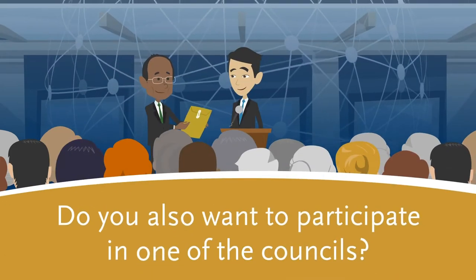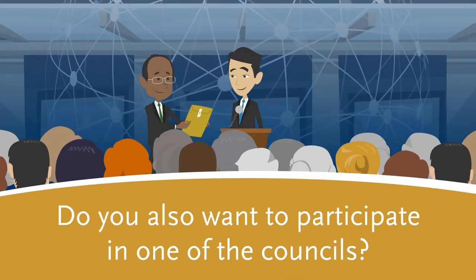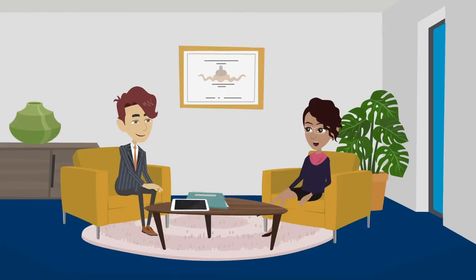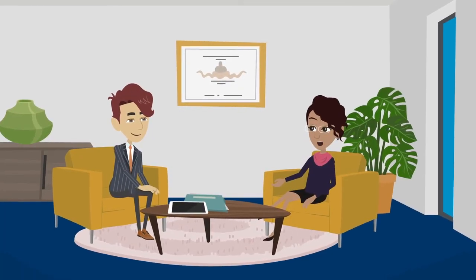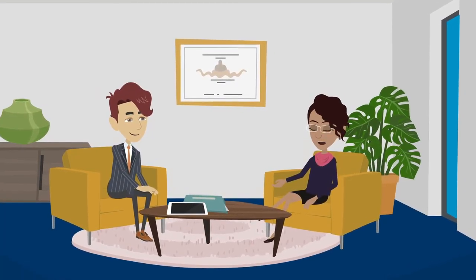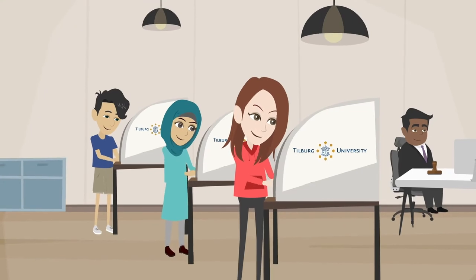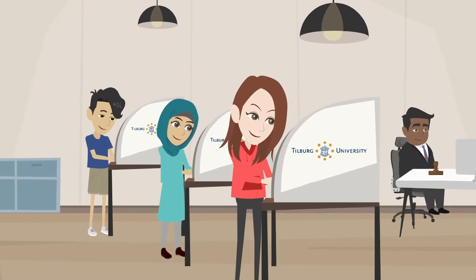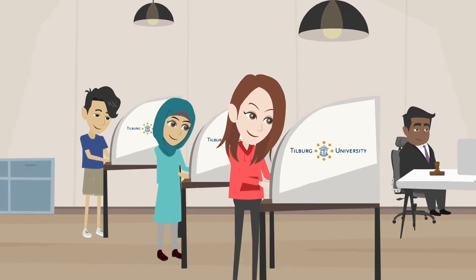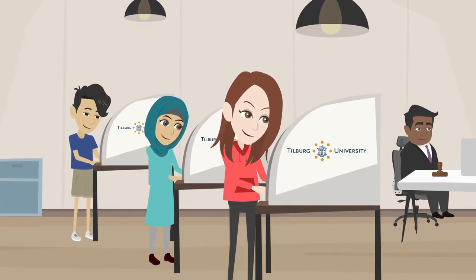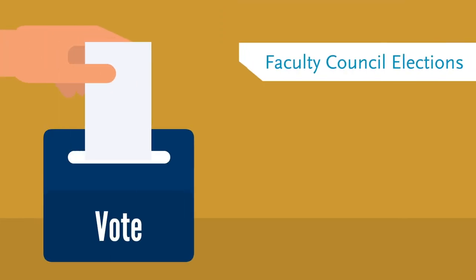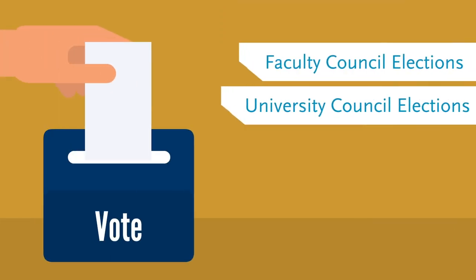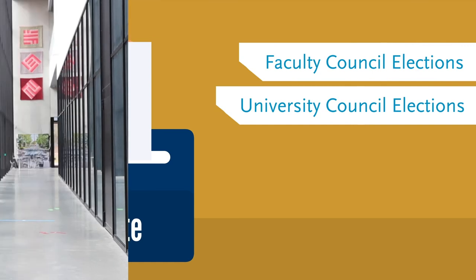Do you also want to participate in one of the councils? You can apply as a candidate by contacting the student party you want to join. During the elections, all Tilburg University students can vote for the candidates from one of the student parties in both the faculty council elections and the university council elections.